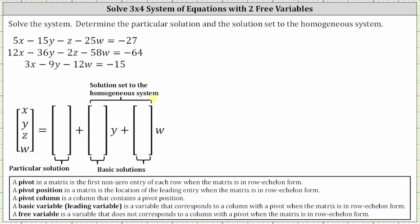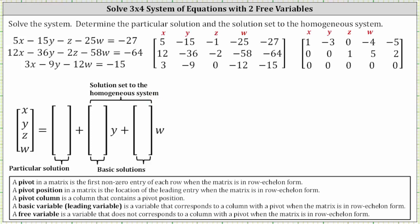To solve the given system, we'll write an augmented matrix and then write it in reduced row echelon form. I've already set this up here on the side. From equation one, we have the row: 5, negative 15, negative 1, negative 25, negative 27. The second equation gives us the row: 12, negative 36, negative 2, negative 58, negative 64. The third equation gives us the row: 3, negative 9, 0, negative 12, negative 15. Notice the zero in the third column because there is no z term in that equation.